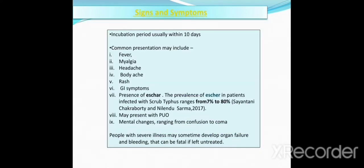The signs and symptoms of scrub typhus usually begin within 10 days of being bitten by an infected mite. The common presentations include fever, myalgia (muscle pain), headache, body ache, rash, gastrointestinal symptoms, and presence of an eschar — an erythematous lesion on the skin at the site of chigger mite bite. It is reported by Shantani Chakraborty and Milandu Sharma in 2017 that the prevalence of eschar in patients infected with scrub typhus ranges from 7% to 80%. Other signs and symptoms include pyrexia of unknown origin and mental changes ranging from confusion to coma. People with severe illness may sometimes develop organ failure and bleeding, which can be fatal if left untreated.